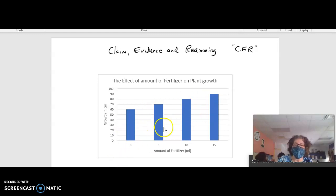So here's a graph that's well-titled, the effect of the amount of fertilizer on plant growth, and well-labeled, growth in centimeters on this side, amount of fertilizer on the x-axis, and we have some data for plants that received 0, 5, 10, and 15 milliliters of fertilizer.